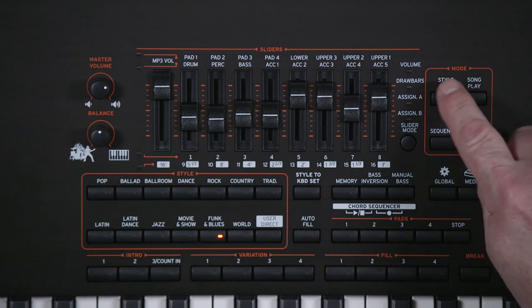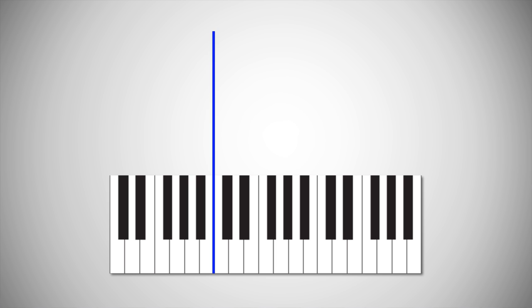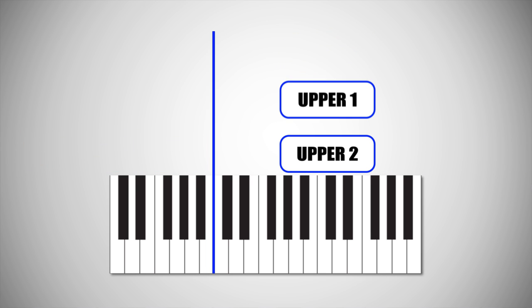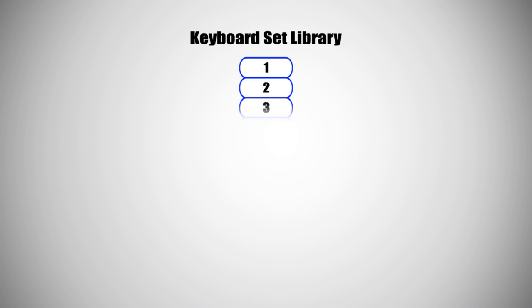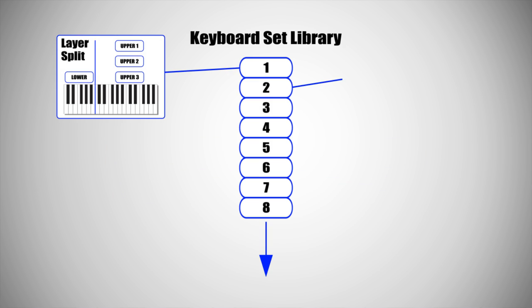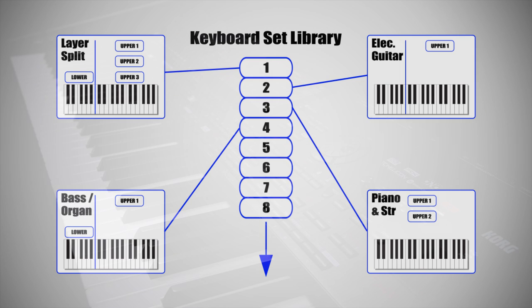Go back to style play mode. Sometimes your keyboard set might be a layer of three sounds on the top plus a sound in the lower, or two sounds in the upper with no sound in the lower, or simply one sound across the whole keyboard. However you set it up — what sounds you are using, the split point, the levels, panning, effects, etc. — it can be saved and recalled from the keyboard set library.